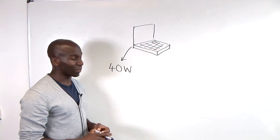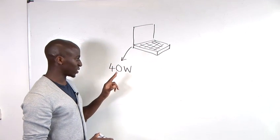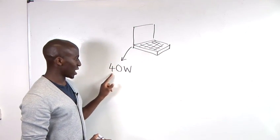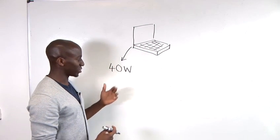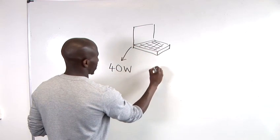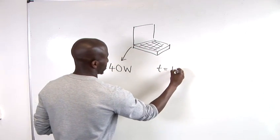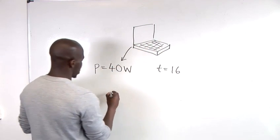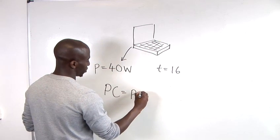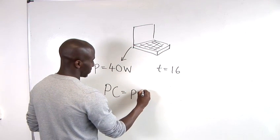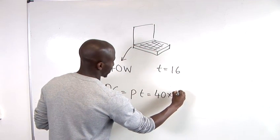Imagine if the laptop is on for 16 hours, all we would need to do is multiply this wattage, which is the power, by our time. So, if the time equals 16, our power consumption is basically just the power used per hour multiplied by the time, which is just 40 multiplied by 16.